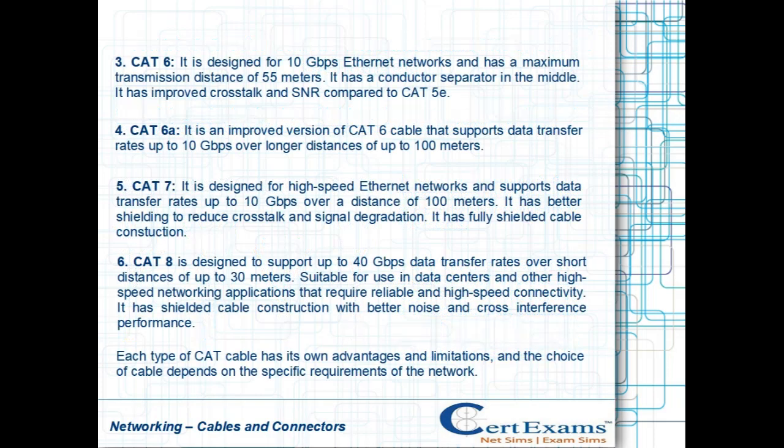CAT 6 is designed for 10 gigabits per second Ethernet networks and has a maximum transmission distance of 55 meters. It has a conductor separator in the middle and improved crosstalk and SNR compared to CAT 5e.